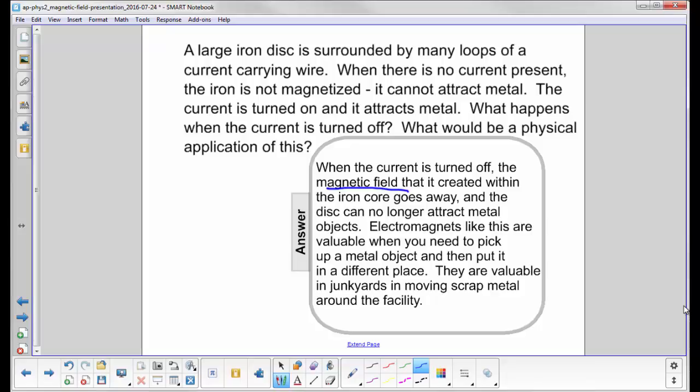You energize the electromagnet, it's magnetic, you pick up some metal, you swivel it over to where you want to drop it off, turn off the current, the magnetism goes away and the junk falls in a different place in the junkyard.